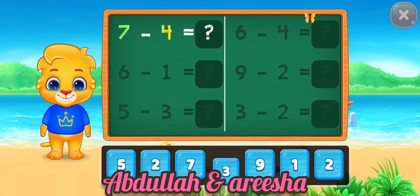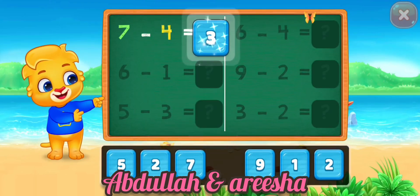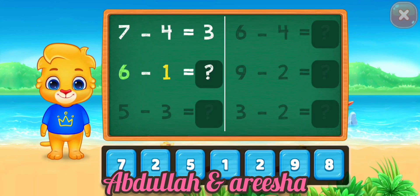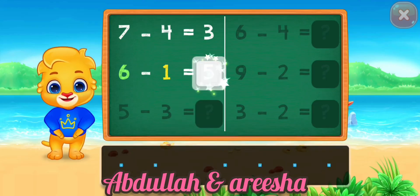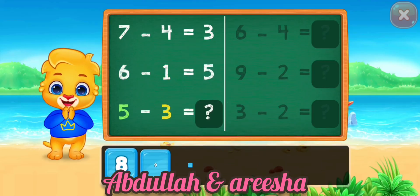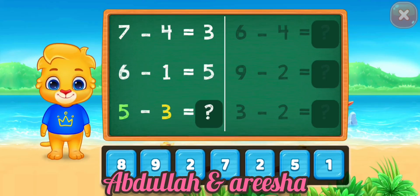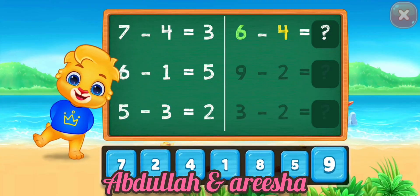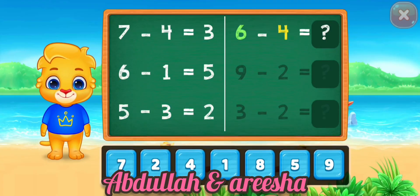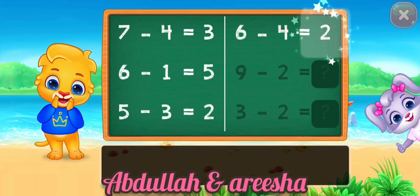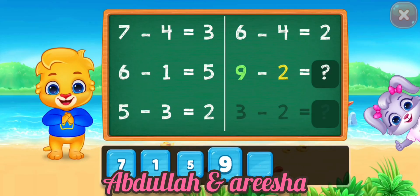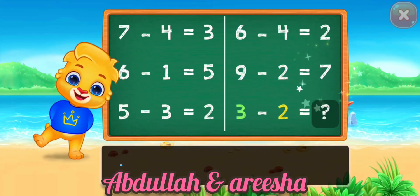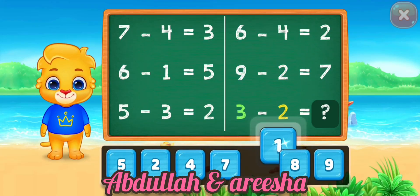7 minus 4 is equal 3. 6 minus 1 is equal 5. 5 minus 3 is equal 2. 6 minus 4 is equal 2. 9 minus 2 is equal 7. 3 minus 2 is equal 1.